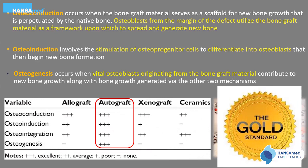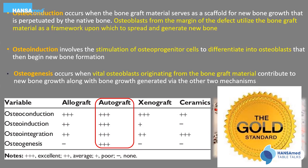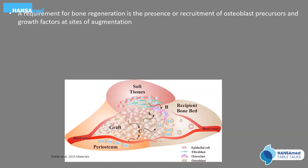Osteoautografts are considered the gold standard, but they have their own limitations. Bone regeneration with grafting requires the presence or recruitment of osteoblastic precursors and growth factors at the grafting site. These precursors can be provided either by the graft material — as with autografts — or by the recipient bed around the grafting area. Osteoprogenitor cells have been shown to infiltrate the graft from the host tissue within seven days.